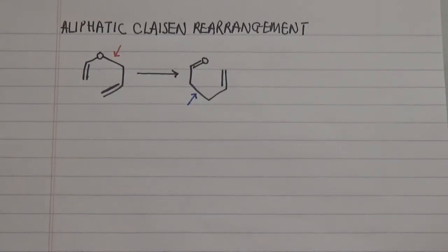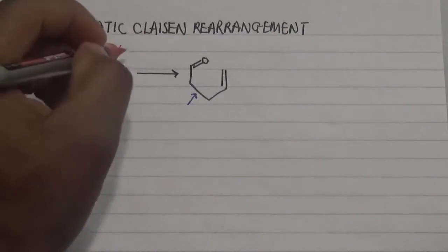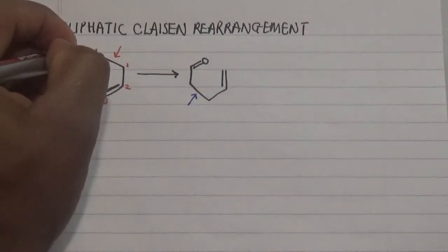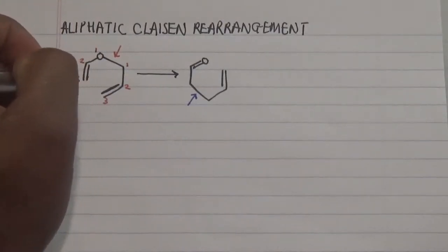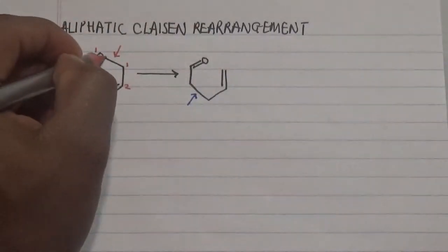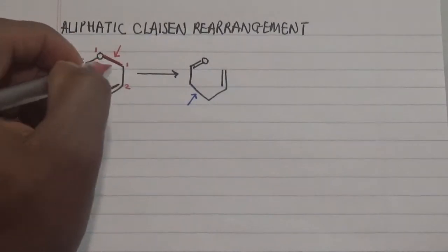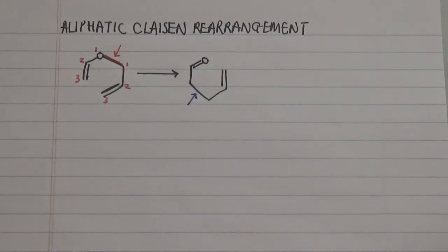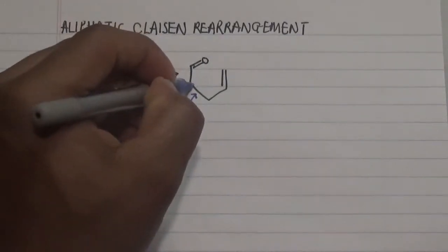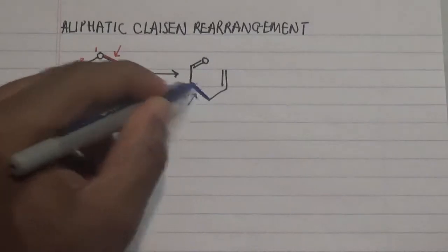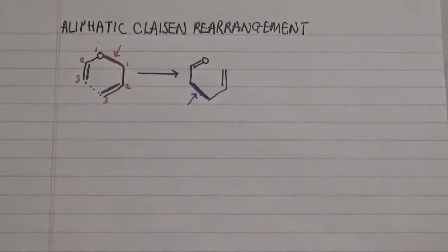We need to understand the notation or numbering system relative from the old bond to the new bond. Our old bond has a 1, 2, 3 numbering here, while the other side also has a 1, 2, 3. So this is a sigmatropic process where both ends of the old sigma bond are numbered 1, and the new sigma bond is at the 3,3-positioning.